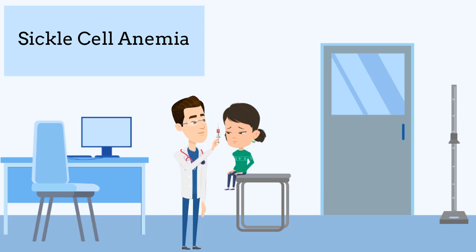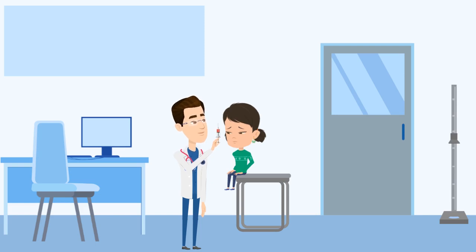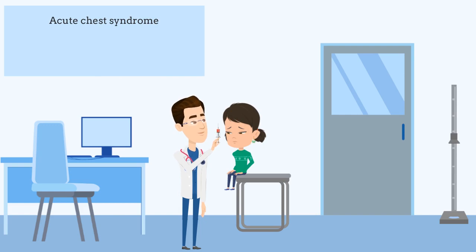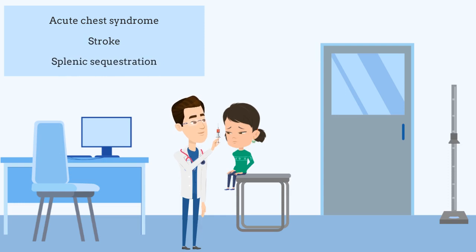Aside from this, other major life-threatening symptoms include acute chest syndrome, which occurs when sickle-shaped red blood cells block the blood flow in the blood vessels of the lungs; stroke; and also splenic sequestration, which is where sickle-shaped red blood cells become stuck in the spleen.